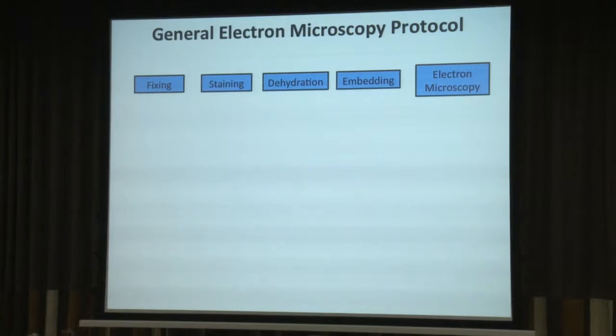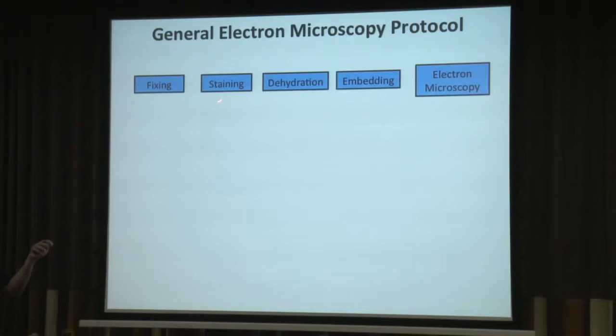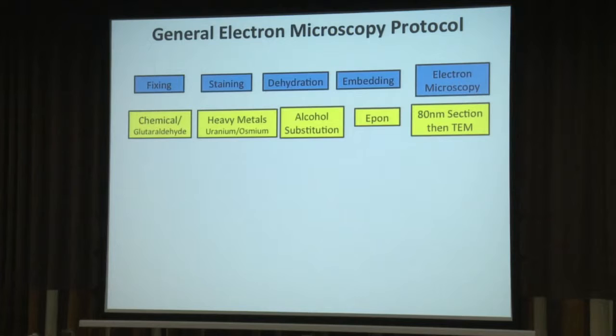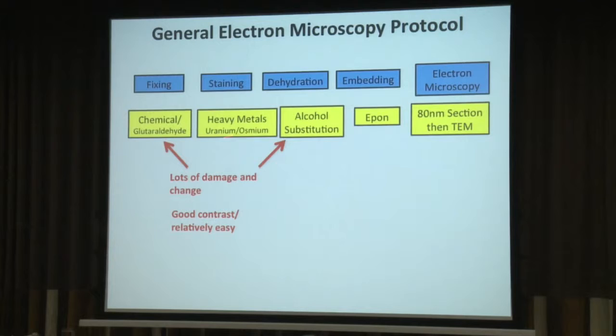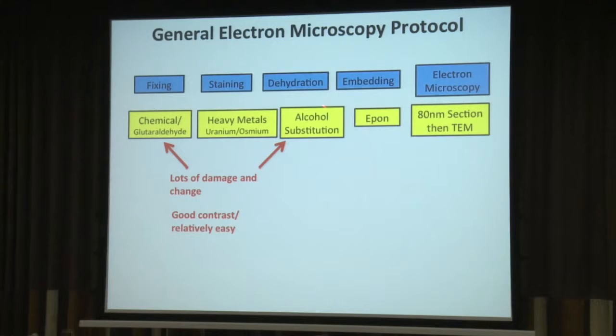Jumping slightly sideways to how we can measure this: general electron microscopy protocol. What we do is we take our sample, we fix it — or technically immobilise the tissues — we then stain it, dehydrate it, put it in some plastic, and then do some electron microscopy on it. Usually it's glutaraldehyde, uranium, osmium, some alcohol to get rid of all the water, then put it into Epon, and then usually use an 80 nanometre thick section. There's lots of artefact and trouble with these particular steps, and for glycocalyx we have to do special staining as well, like the Alcyon Blue.